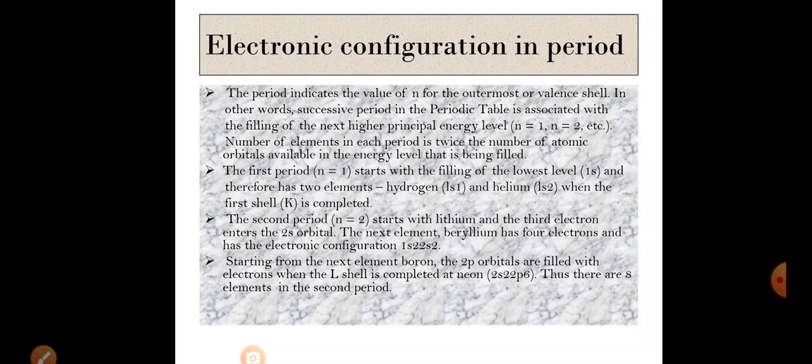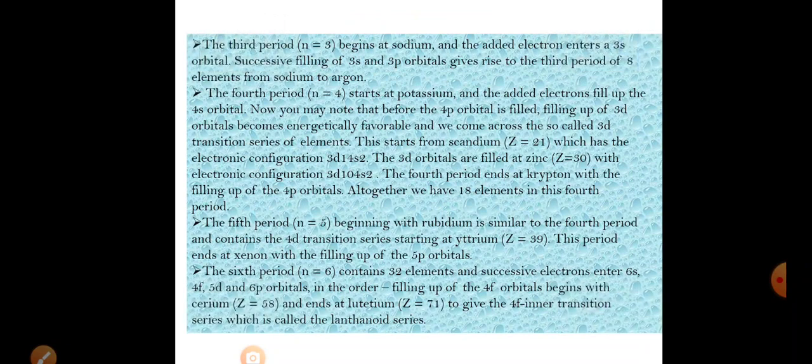Third period: n=3, starts with sodium. The outermost electron enters the 3s orbital. The successive filling of 3s and 3p orbitals gives rise to the third period, from sodium to argon. Here also, only s and p orbitals are involved — 4 orbitals total — giving 8 elements in the third period.